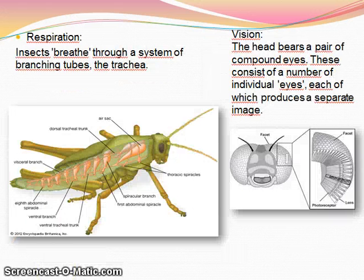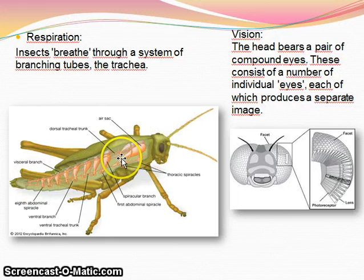Respiration. Insects breathe through a system of branching tubes called the trachea. Oxygen and carbon dioxide move along these by a process called diffusion. The trachea opens on the surface of the body at special pores called the spiracles. Insects may control the size of these pores.